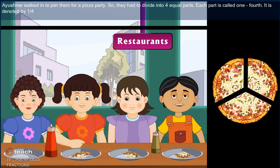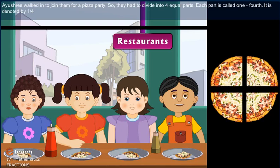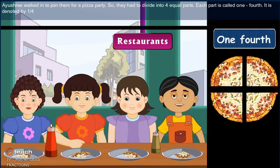Ayushree walked in to join them for a pizza party. So, they had to divide into four equal parts. Each part is called one fourth. It is denoted by one by four.